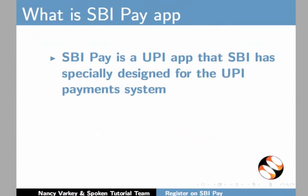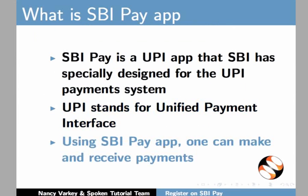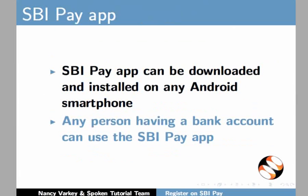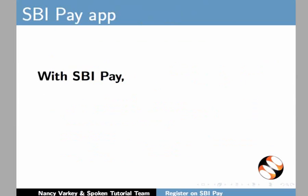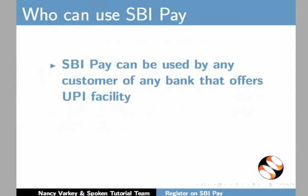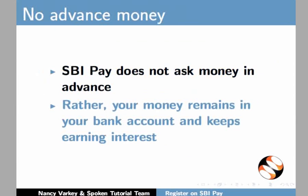SBI Pay is a UPI app that SBI has specially designed for the UPI Payments system. UPI stands for Unified Payment Interface. Using SBI Pay app, one can make and receive payments. It can be downloaded and installed on any Android smartphone. Any person having a bank account can use it, and one can do transactions without having to disclose any bank or card details. SBI Pay can be used by any customer of any bank that offers UPI facility. SBI Pay does not ask money in advance; your money remains in your bank account and keeps earning interest.